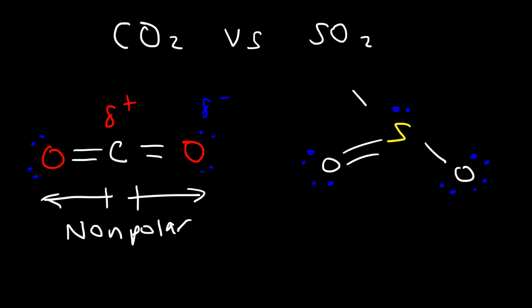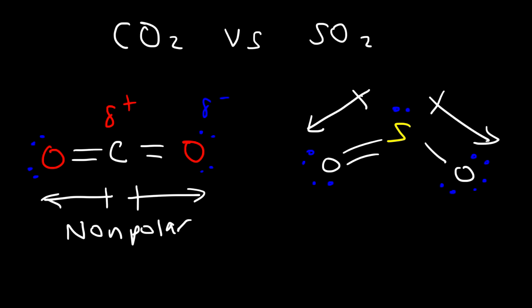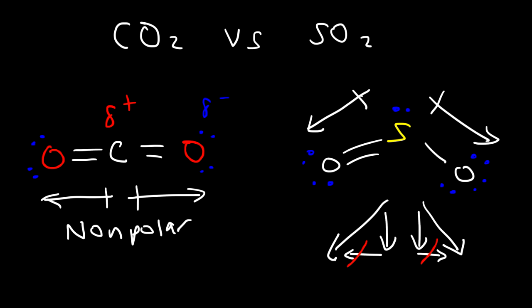However, due to the bent shape of the sulfur dioxide molecule, it is polar — there is a net dipole that points in this direction. If you wish to add two vectors: if you have a vector going in one direction and a vector going in another direction, the x-components of those two vectors will cancel — one goes left and one goes right. However, the y-components add up because both are going in the negative y direction. Therefore, the net dipole moment of SO2, based on the way it's drawn, is downward, pointing towards the oxygen atoms. Because SO2 has a net dipole moment, it is a polar molecule.